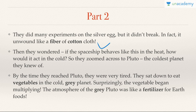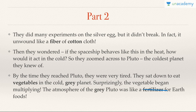Then they wondered how the spaceship would act in the cold, so they went to Pluto. By the time they reached Pluto, they were very tired and sat down to eat vegetables on the cold gray planet. Surprisingly, the vegetables began multiplying and the atmosphere of gray Pluto was acting as a fertilizer for the food — so gray is associated with fertilizers.